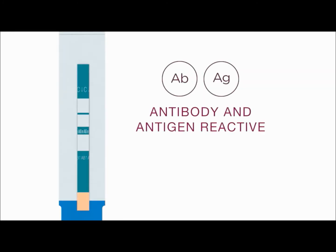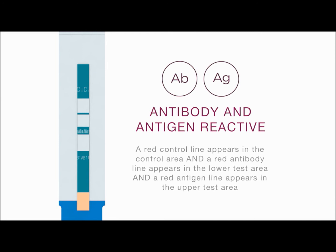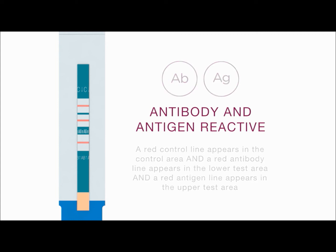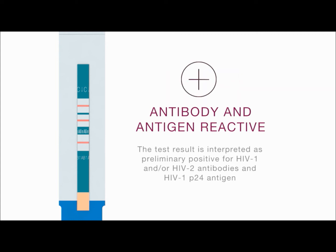Antibody and antigen reactive: a red control line appears in the control area, a red antibody line appears in the lower test area, and a red antigen line appears in the upper test area. The intensity of the antibody, antigen, and control lines may vary. Any visible red line in the control area, the lower test area, and the upper test area, regardless of intensity, is considered reactive. The test result is interpreted as preliminary positive for HIV-1 and/or HIV-2 antibodies and HIV-1 P24 antigen.